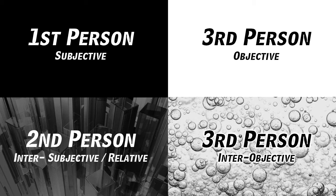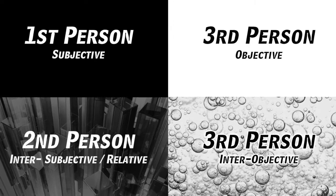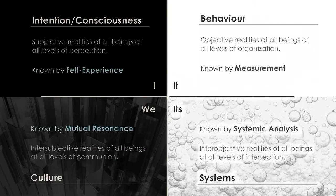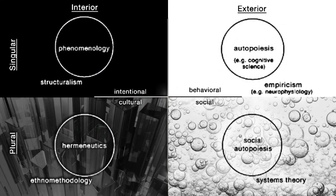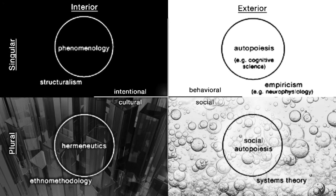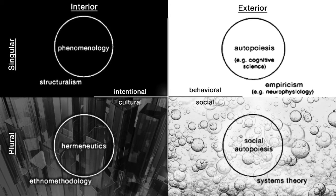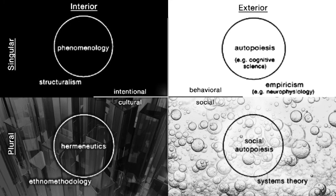Sounds fun, right? So within these different quadrants — these different aspects of reality — there are different approaches to knowledge and different types of study. This is extended further into what we call integral methodological pluralism, or what we call zones. For example, in the upper left quadrant, you can take a first person perspective on a first person perspective, like giving a report of your own first person perspective, and that is called phenomenology. Whereas you can also give a third person perspective on a first person perspective, and that's called structuralism.